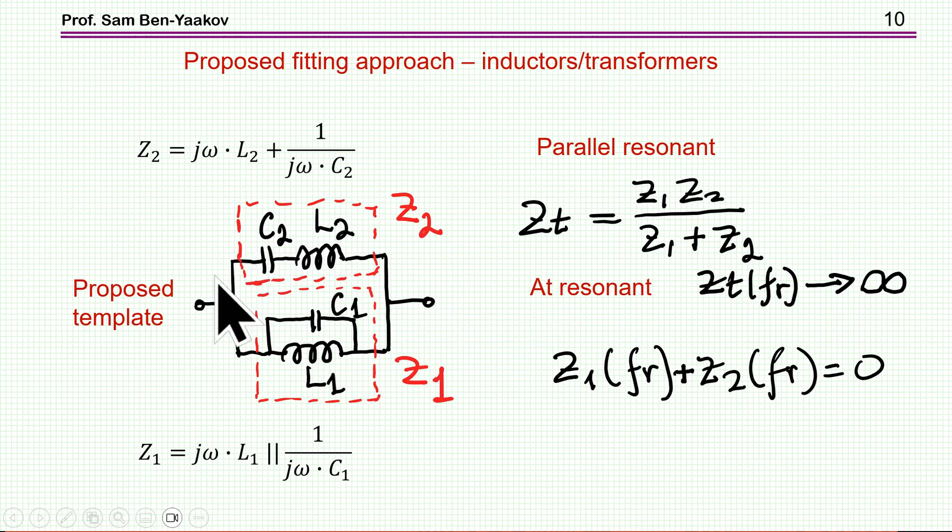Then this will have a parallel resonant. I'm now talking about a parallel resonance of the whole structure when the denominator is, of course, approaching zero. And then the impedance will approach infinity, high impedance. This is a parallel resonance.